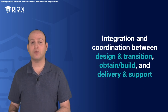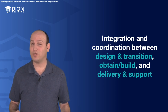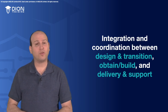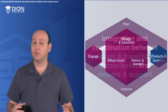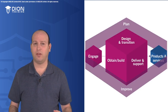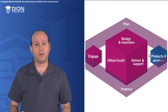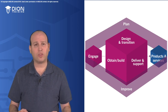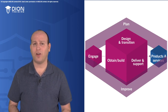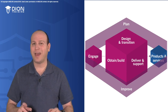As we look at our products and services, our demand and our value — these are not considered value chain activities. Those go back to our service value system; they are our inputs and outputs. So what we're really looking at inside are engage, plan, improve, obtain and build, delivery and support, and design and transition. That is what we're gonna be focusing on in this section of the course, and we're gonna dive into each one of those in their own separate lecture as we move forward.